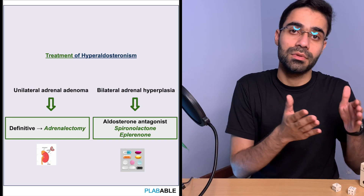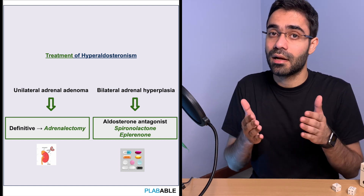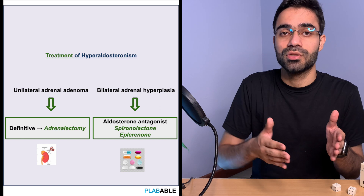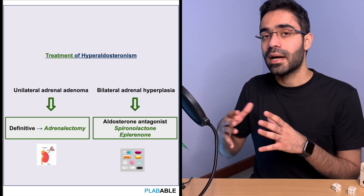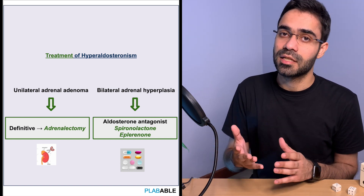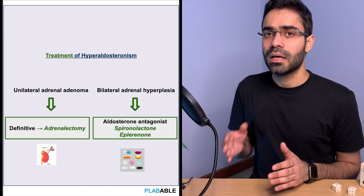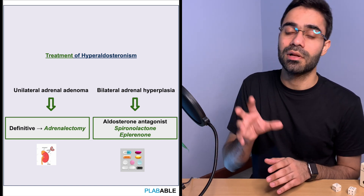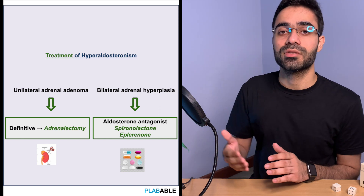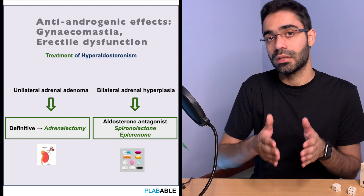Treatment of hyperaldosteronism is divided into surgical and medical management. Patients with unilateral adrenal enlargement are candidates for adrenalectomy. Patients with bilateral adrenal hyperplasia require medical management with aldosterone antagonists such as spironolactone or eplerenone. Spironolactone is a non-selective aldosterone receptor antagonist and also suppresses testosterone receptors, leading to adverse effects like gynecomastia. Eplerenone is more selective and has fewer such adverse effects.